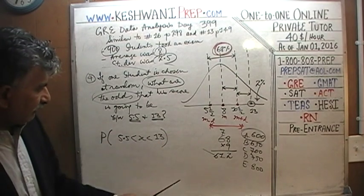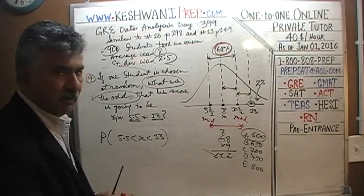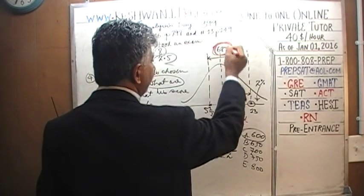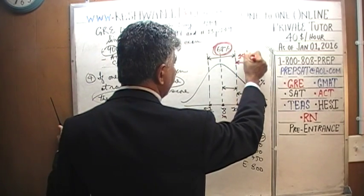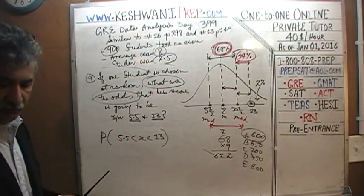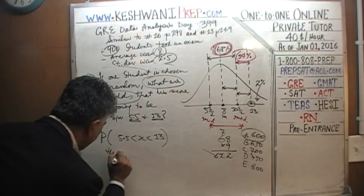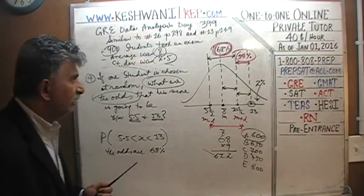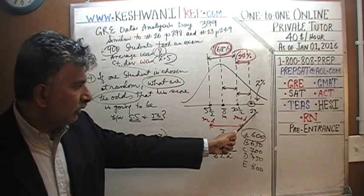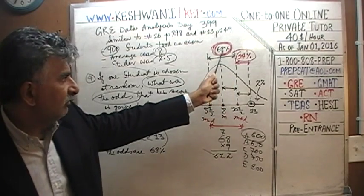Where is 5.5? It's right there at the left boundary — one standard deviation below the mean. And 13 is right here — two standard deviations above the mean. From 5.5 to 10.5 is 68%, and from 10.5 to 13 is another 14%. So 68% plus 14% gives us our answer.